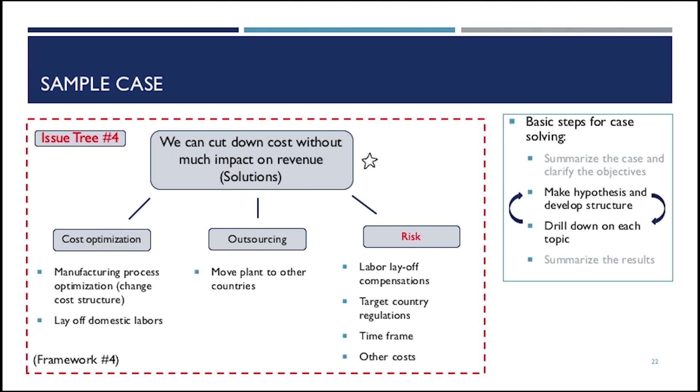Now you have another issue tree to give the solutions since you got the root cost. So it is still a hypothesis. We do a hypothesis first. We can cut down cost without much impact on the revenue. So that's our target. That's what we would like to do. And we focus on three major things: cost optimization, outsourcing, and what I call decoration - the risk. In cost optimization, we would like to see the manufacturing process if we can do anything on that, and if we have to lay off our domestic labor like our competitors did. And for outsourcing, we may want to move our plant to another country so they don't have regulations for their minimum wage like us.